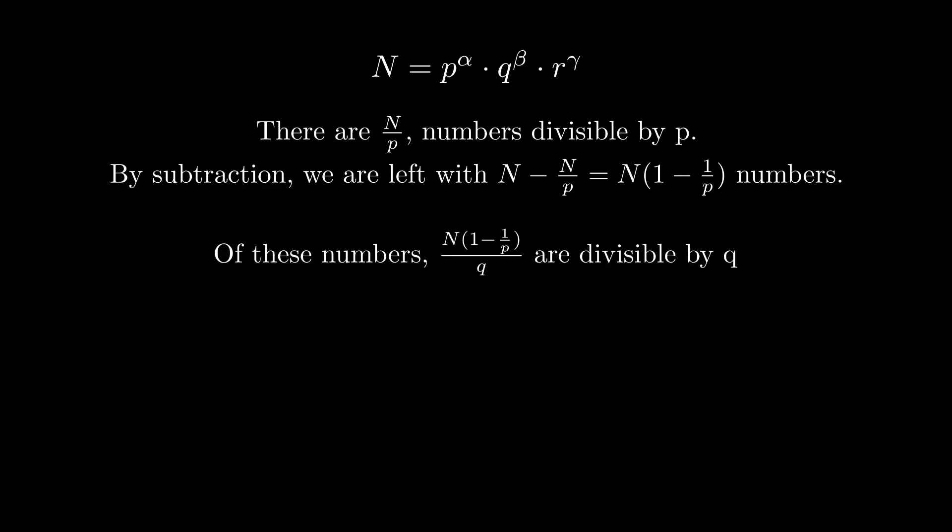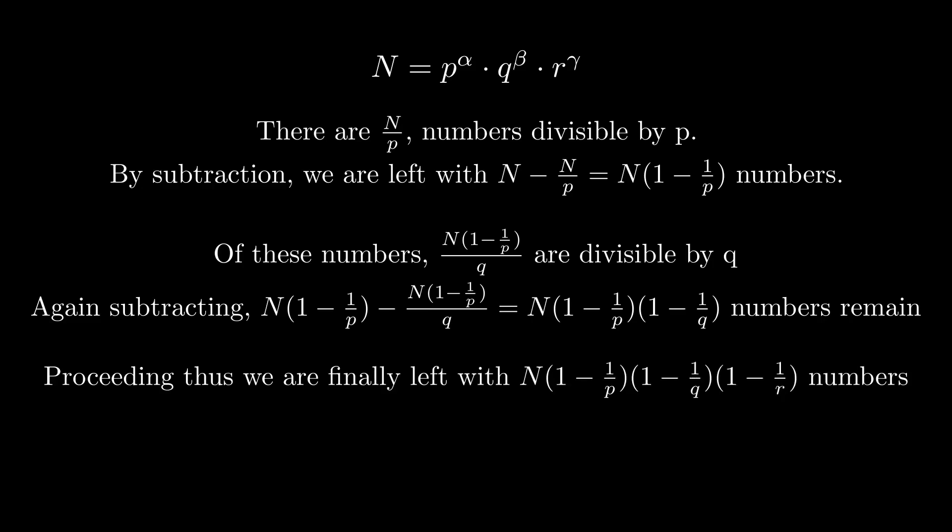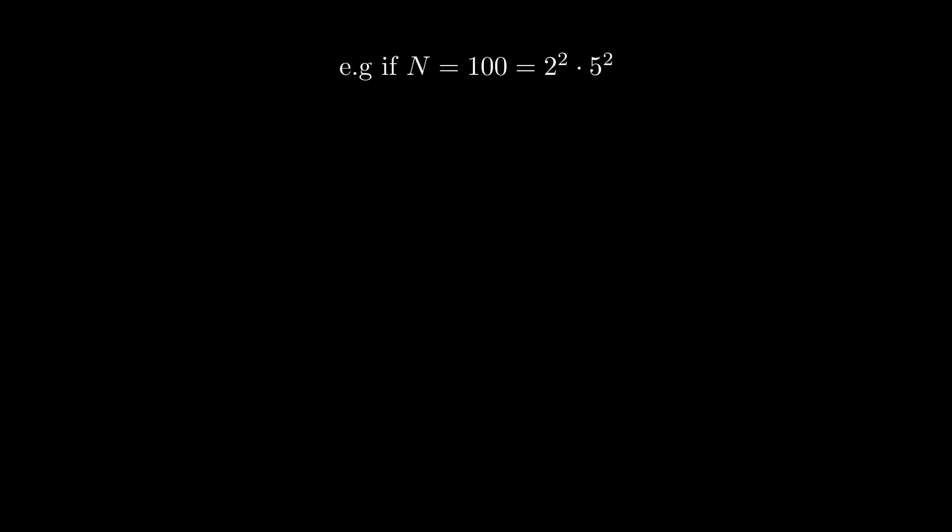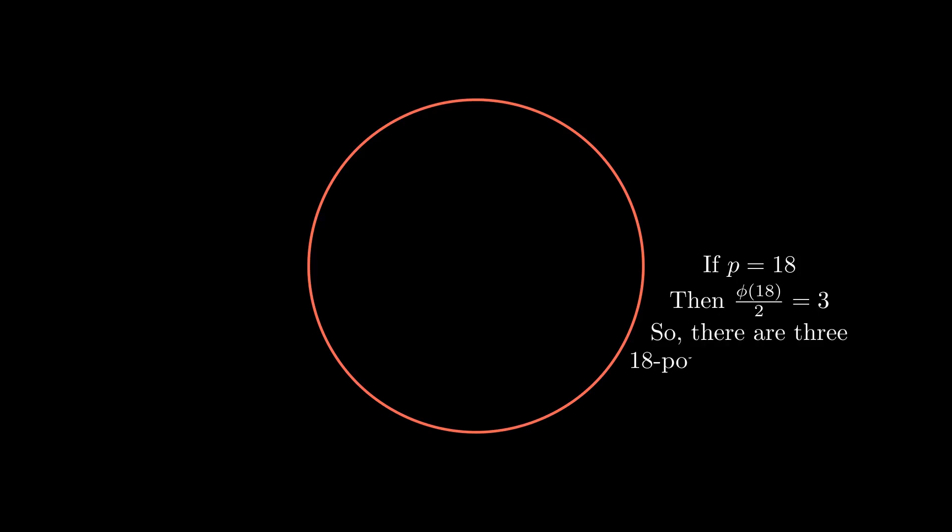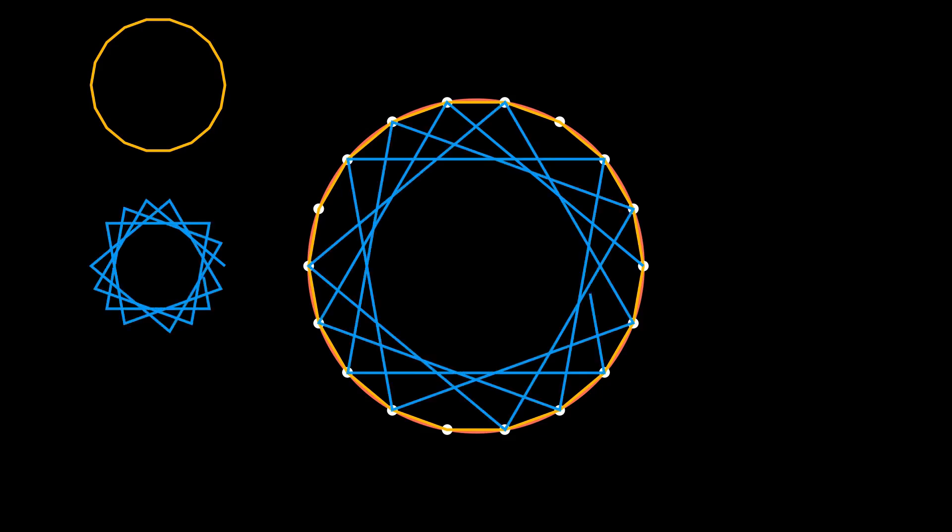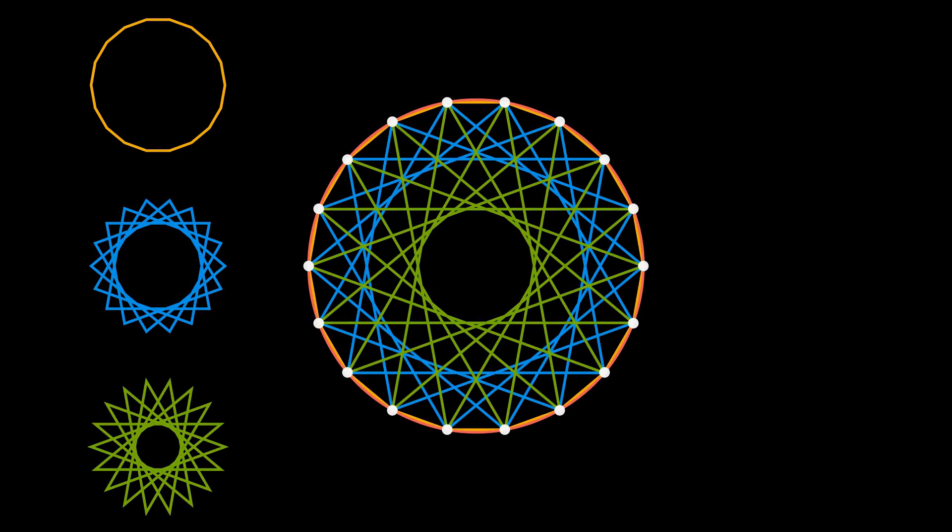And indeed, when we know all the prime numbers by which any number n is divisible, say p, q, r, and so on, we get a nice expression for phi of n. And how many prime p-pointed stars are there? Phi of p by 2. For example, there are only three 18-pointed prime stars.